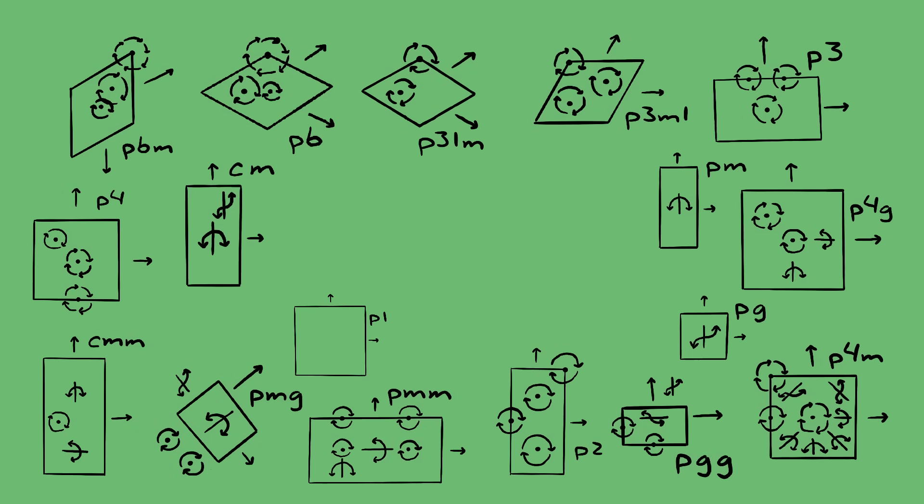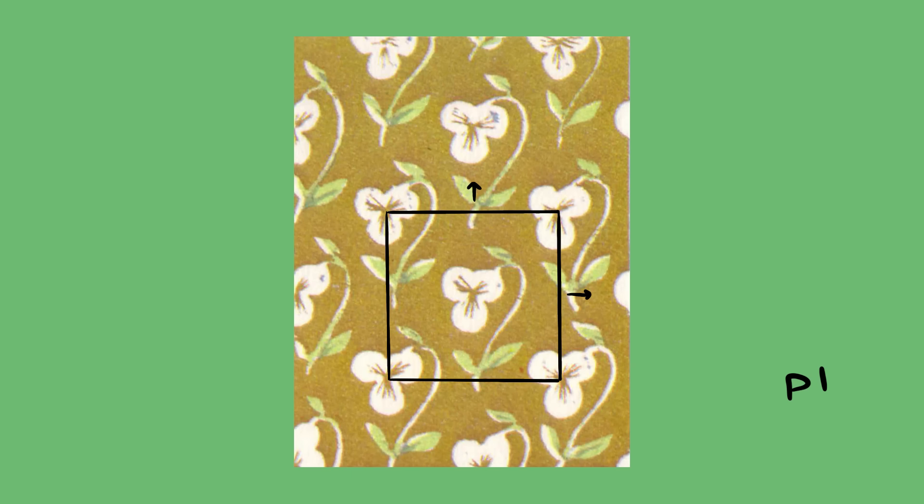We call the set of space groups in two dimensions the wallpaper groups, since wallpapers have repeating patterns. There are 17 wallpaper groups.